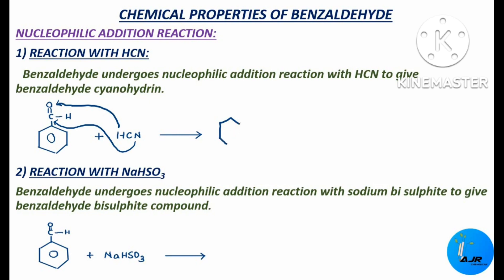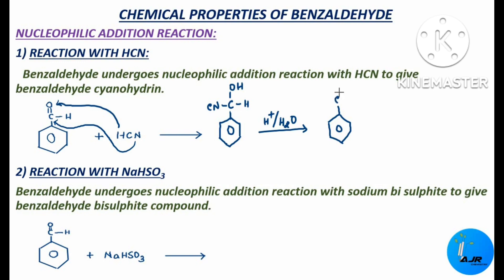Let me write the benzaldehyde cyanohydrin product — carbon H OH and CN gets added up here. Now this undergoes hydrolysis with H plus water. The CN which is attached to the carbon gets converted to COOH. So this is called mandelic acid. This is an important reaction.